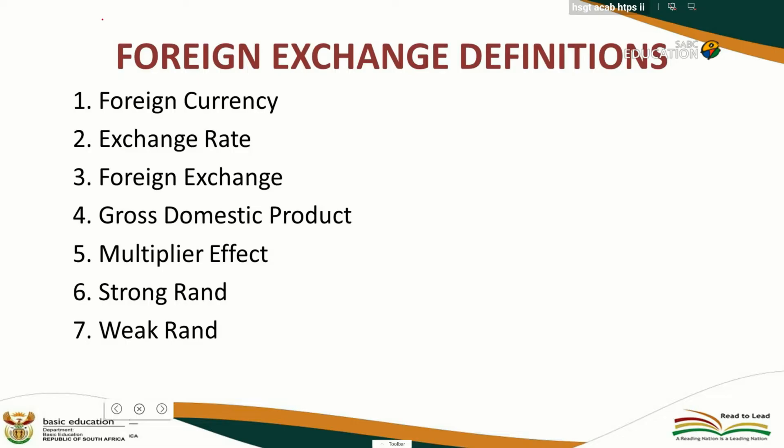Exchange rate, foreign exchange, gross domestic product, multiplier effect. The two terms we only focus on in Grade 12 are strong RAND and weak RAND. I'm going to discuss each one separately.